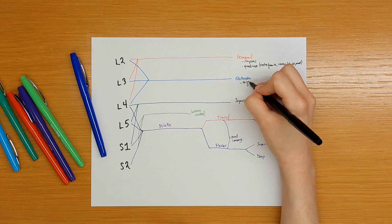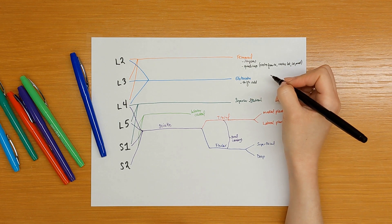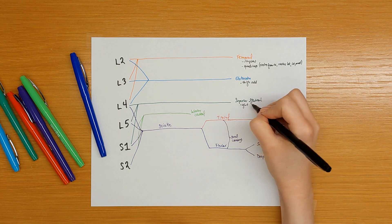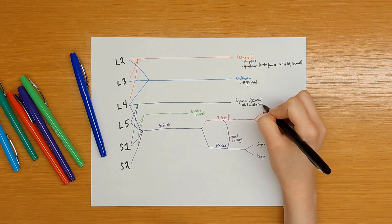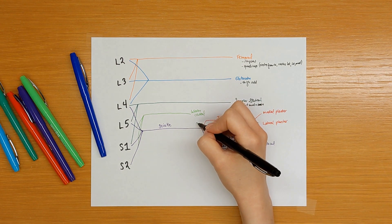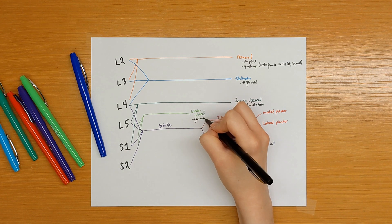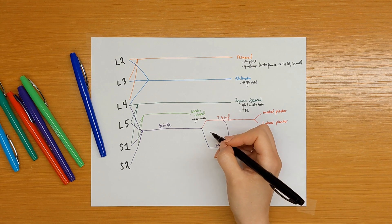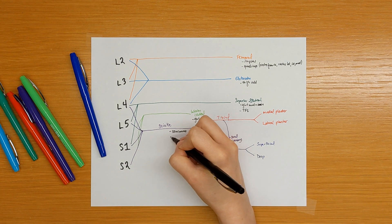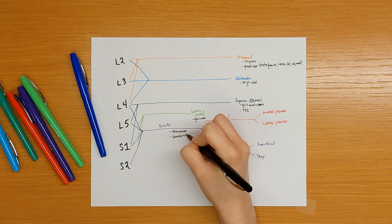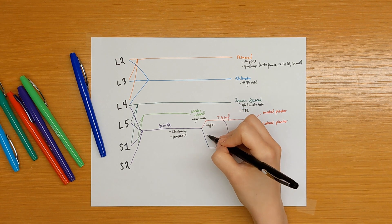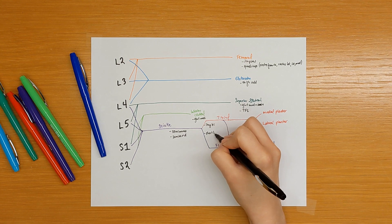The obturator innervates the thigh adductors — this is a group of five muscles, which we need to know at the advanced level. The superior gluteal nerve innervates the gluteus medius and minimus, as well as the TFL, tensor fasciae latae. And the inferior gluteal nerve innervates the gluteus maximus muscle. For the hamstrings — four muscles — the sciatic portion innervates the semimembranosis and semitendinosis. The tibial portion innervates the long head of biceps, and the fibular nerve portion innervates the short head of biceps.